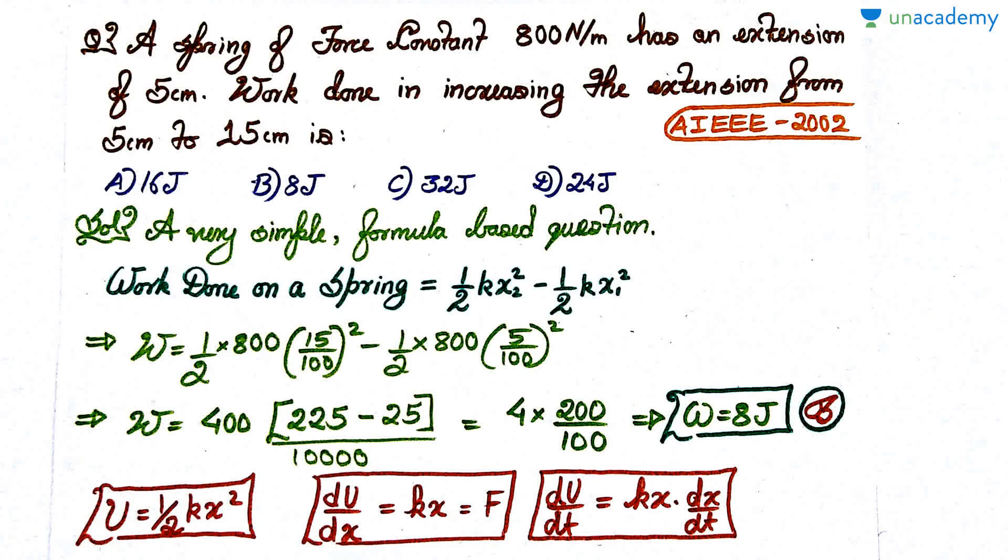Let's move on to the next question. It's very easy. A spring is given with force constant 800 newton per meter, has extension of 5 centimeter. Work done in increasing the extension from 5 centimeter to 15 centimeter is—it's really really simple problem.